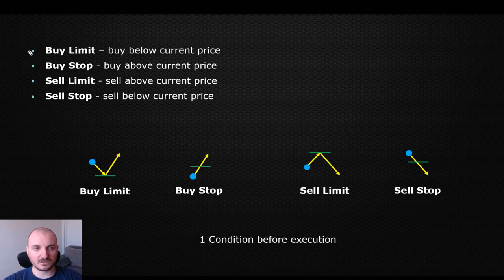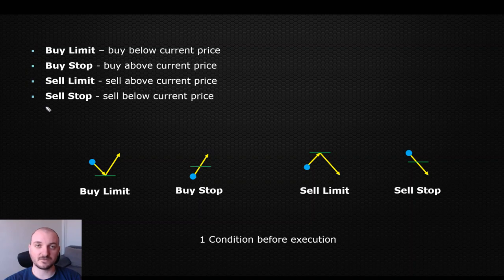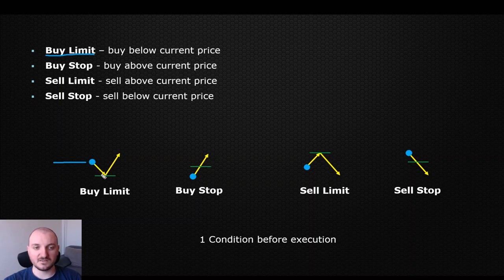The four types of orders that we had previously, as we know them from MT4, didn't change. So let's cover them very quickly. Buy limit is basically a type of order where the current price is moving here, we want to see the price giving us a pullback, a move down to go to lower levels, and this is where the actual order is going to be executed. This is where we are going to enter a buy trade.